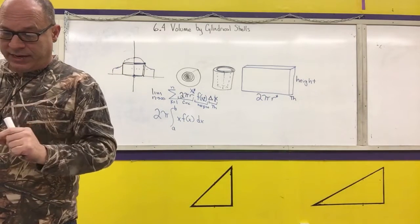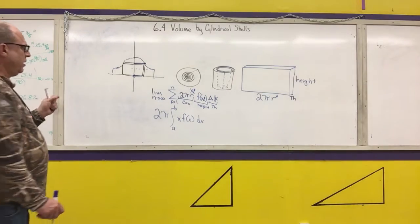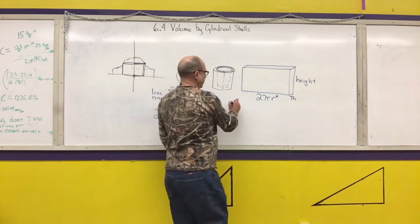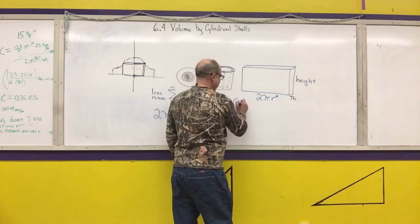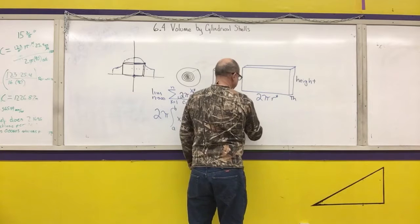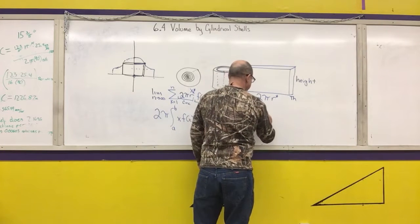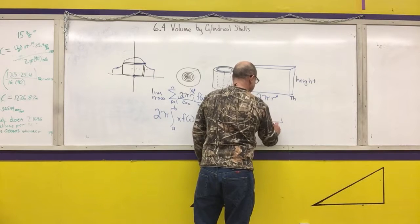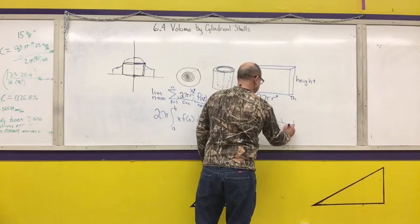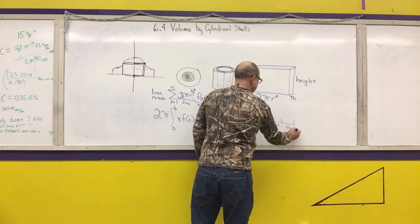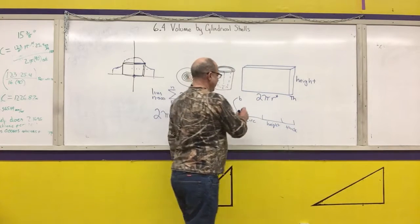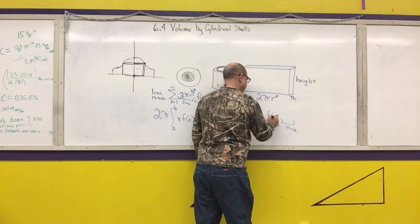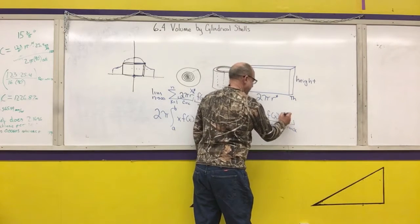I always write it, when I am doing the problems, is I do not memorize it this way. I memorize it as the integral from a to b of the circumference times the thickness, or times the height, times the thickness. That's the way I memorize it. Circumference is 2 pi x, height is f of x, and the thickness is dx.